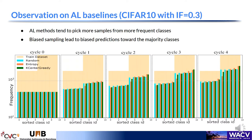What motivated us to consider class-balanced active learning is the distribution of samples selected by active learning methods when the dataset is imbalanced. In the background, you see the imbalanced dataset in yellow. We observe that entropy and k-center greedy as informative and representative active learning methods tend to pick more samples from more frequent classes. And when we train the model on biased samples, its predictions will be biased toward majority classes.